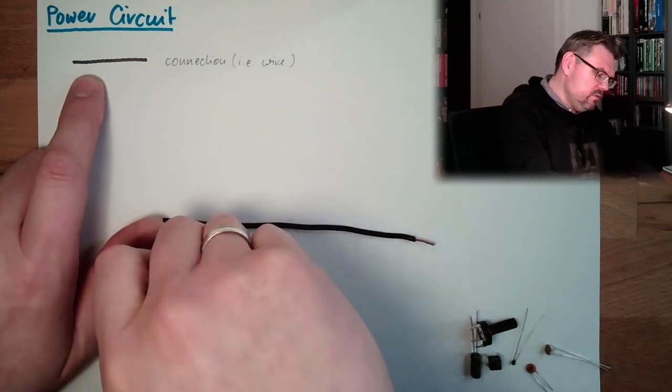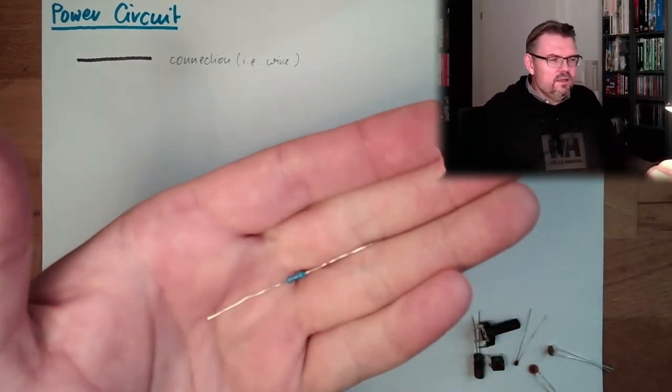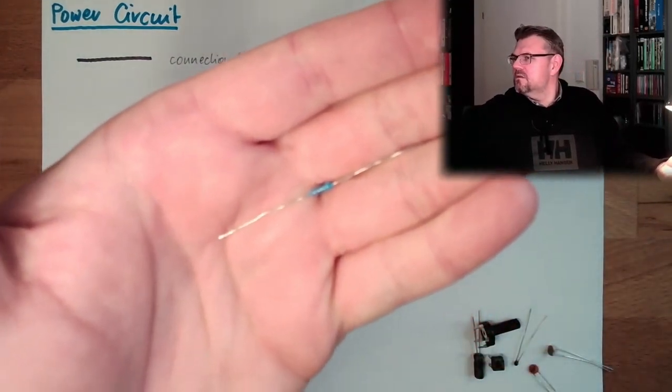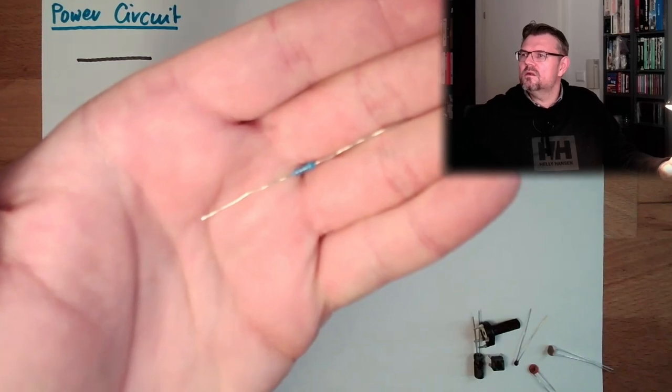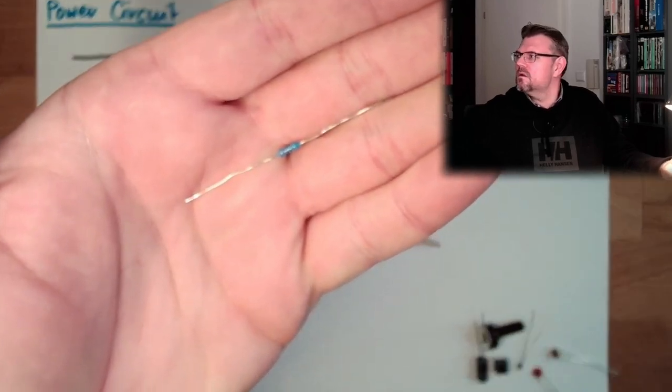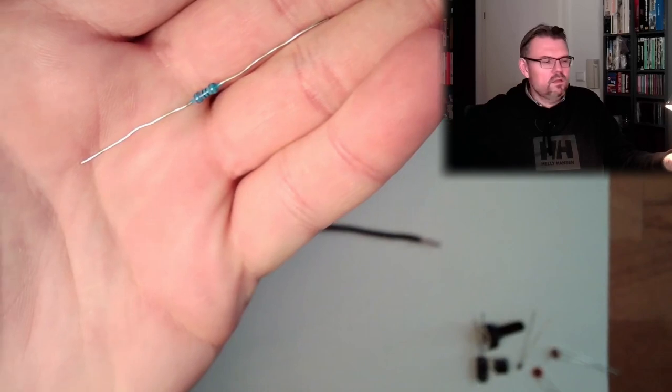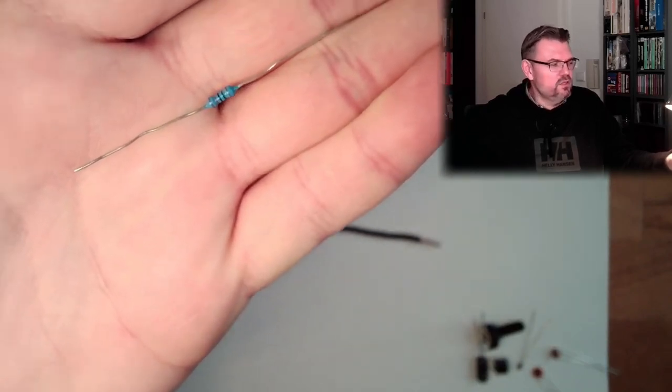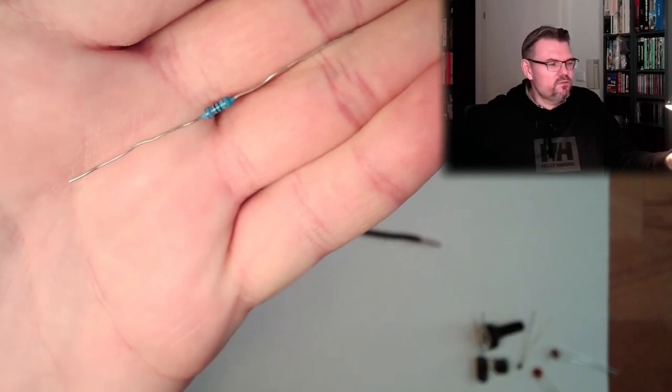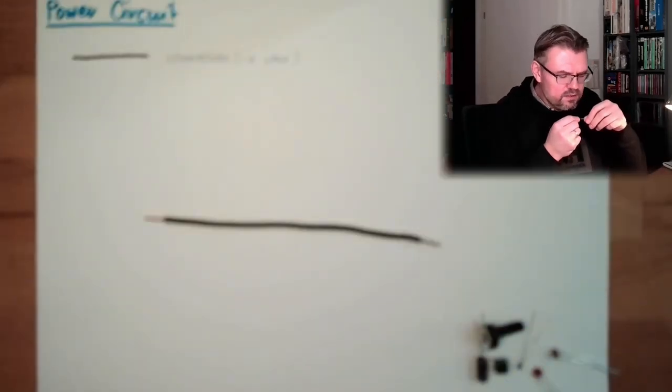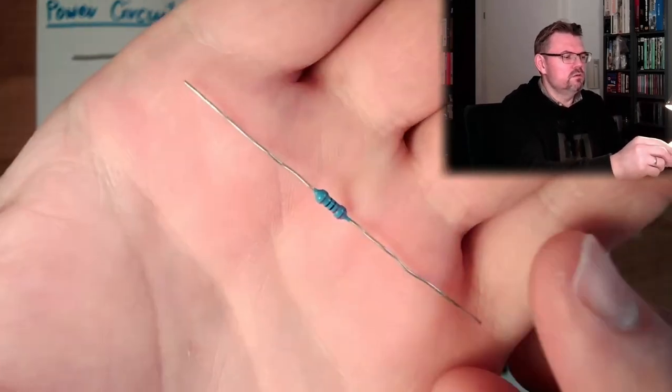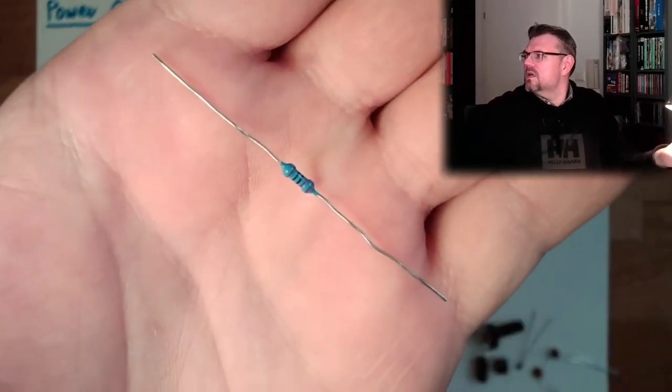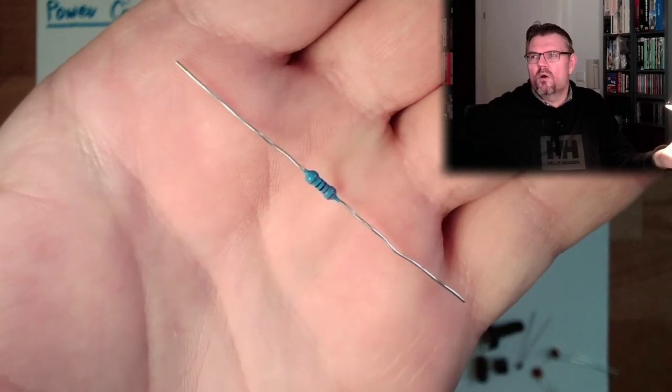And this here, look at that. This is a resistor. This is how a resistor looks like if you buy them, at least a big resistor. The resistance value actually - what is this resistance value? This is 220 ohms.